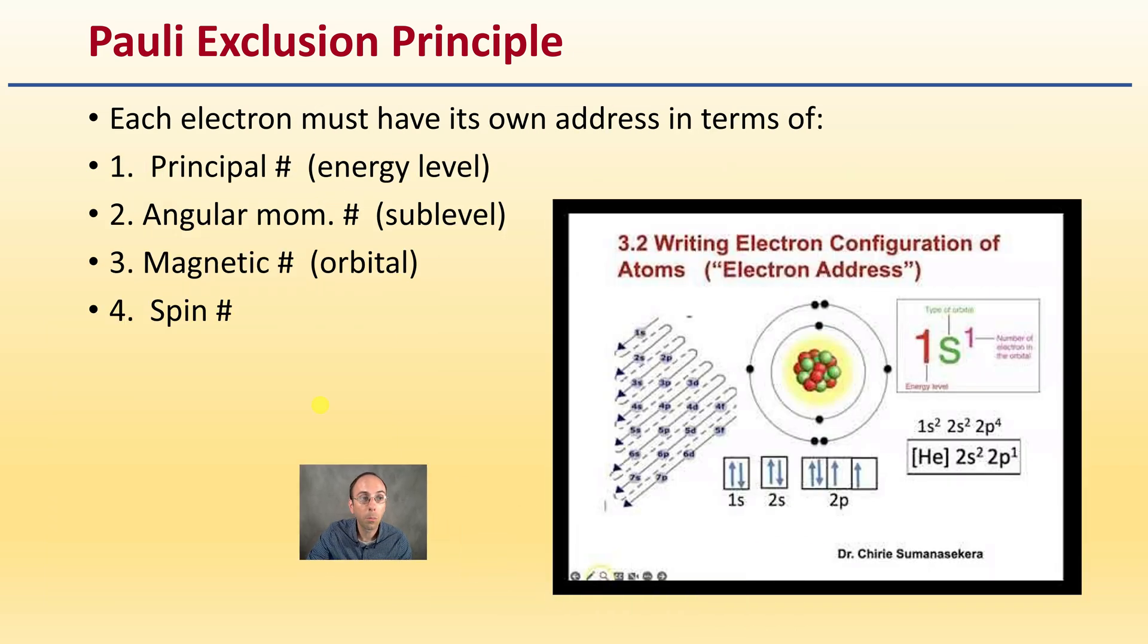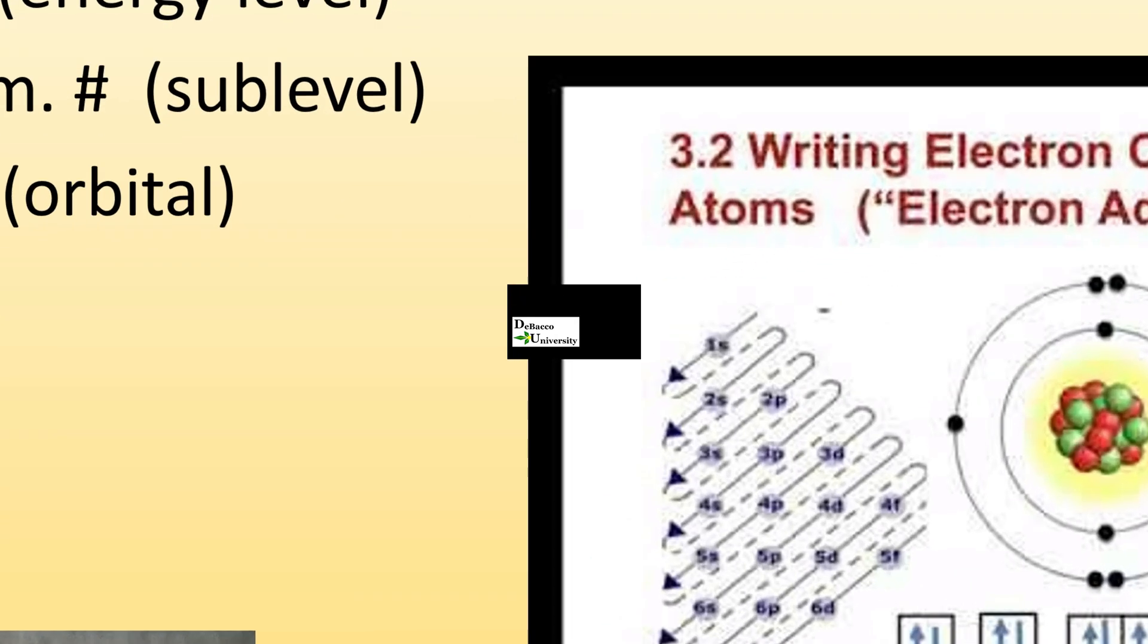So when we look at the Pauli Exclusion Principle, each electron must have its own address in terms of principal number, angular momentum number, magnetic number, and spin number. When you're making the arrows here, make sure that there's a maximum of two per box and that they have opposite spins, one up and one down, as shown here in this proper way to write electron configurations and orbital diagrams.